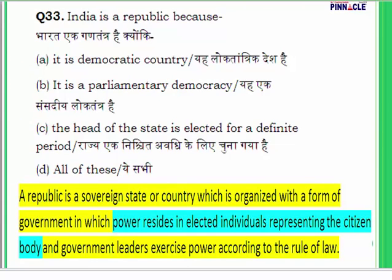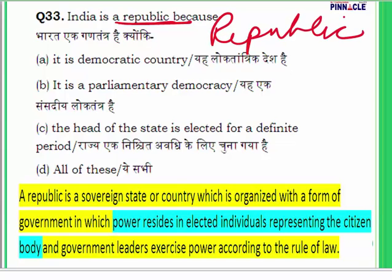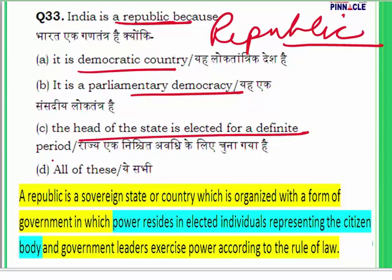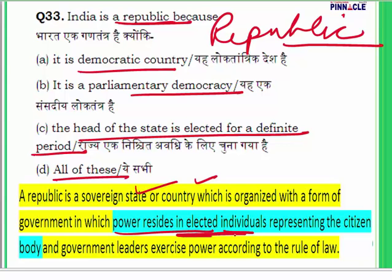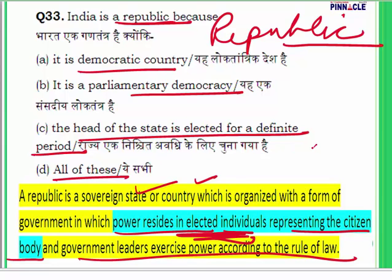Question 33: Why is India a republic? A republic is a sovereign state or country organized with a form of government in which power resides in elected individuals representing the citizen body, and government leaders exercise power according to the rule of law. The head of state is elected by the people for a definite period. The answer for question 33 is C.